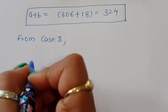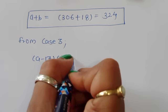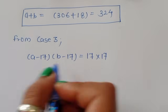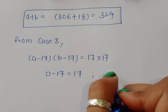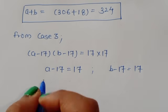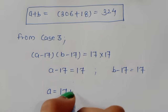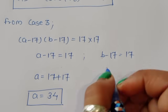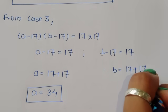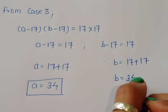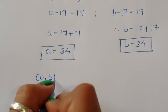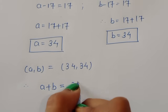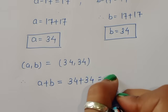Case 3: (a - 17)(b - 17) = 17 × 17 = 289. Comparing, a - 17 = 17 and b - 17 = 17. Therefore a = 17 + 17 = 34 and b = 17 + 17 = 34. So a + b = 34 + 34 = 68.